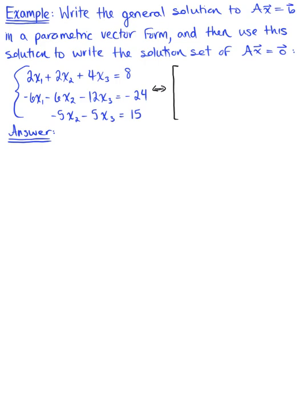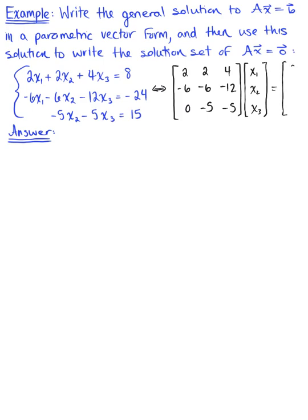We have our coefficient matrix A: [2, -6, 0; 2, -6, -5; 4, -12, -5], multiplied by the vector x in R3 with entries x1, x2, x3, equal to the constant vector b: [8, -24, 15]. So here is our matrix equation — that non-homogeneous equation — matrix A times vector x equals constant vector b.